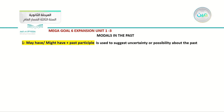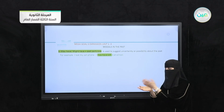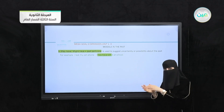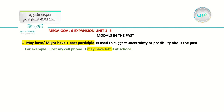For example: 'I lost my cell phone. I may have left it at school.' I'm not 100% sure whether I left it at school or not — so I say 'I may have left it,' meaning maybe there or maybe not. Notice that when we use may have or might have, we follow it with the past participle. In this sentence, the past participle is 'left.'